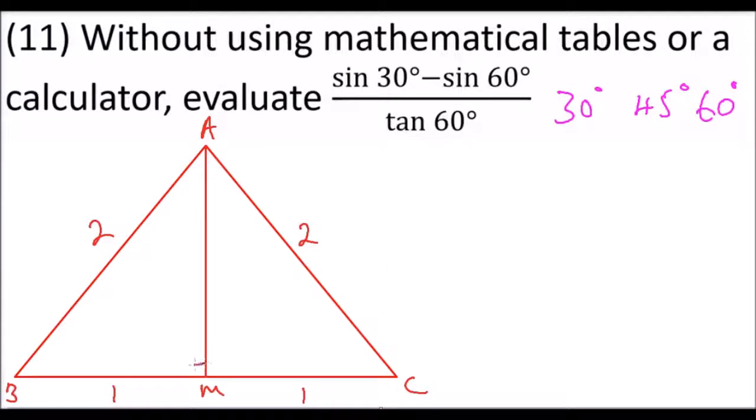To get AM, it equals the square root of 2 squared minus 1 squared. This equals the square root of 4 minus 1, which equals the square root of 3. So it means this side is the square root of 3.